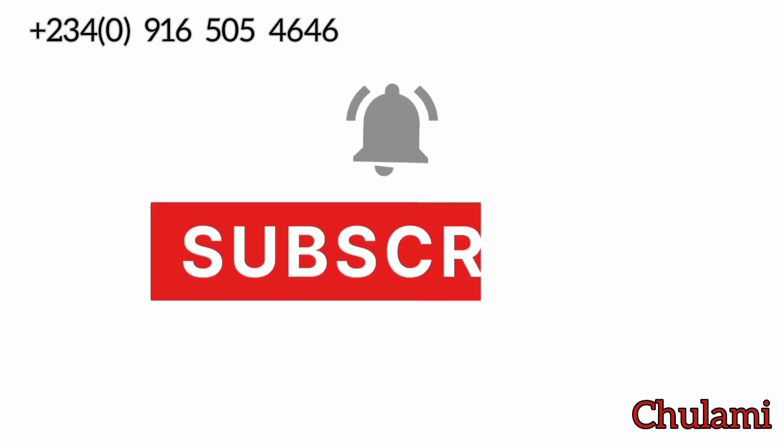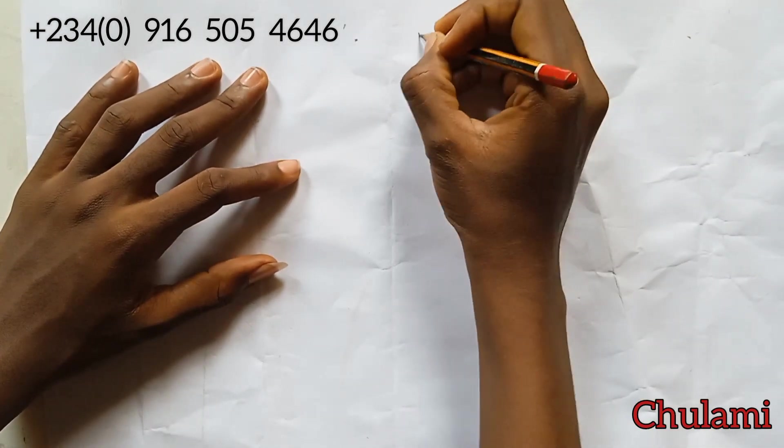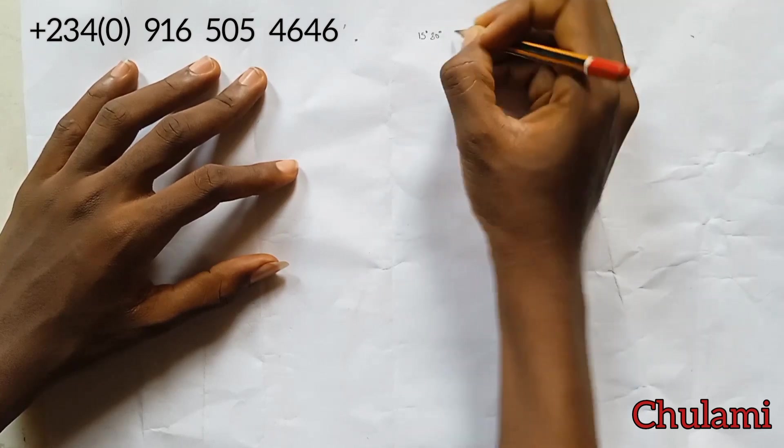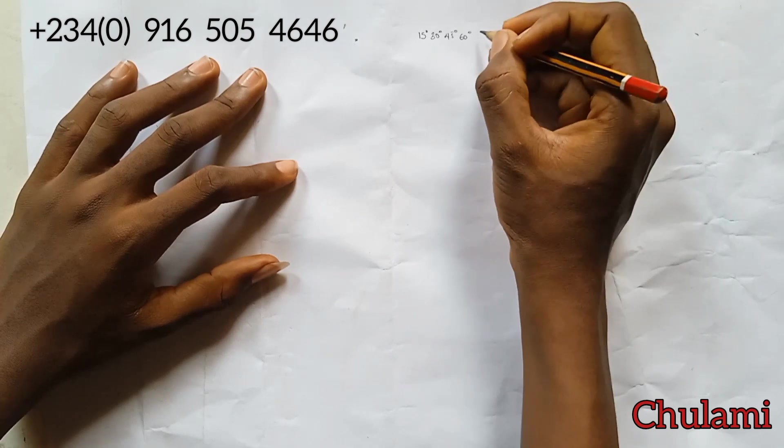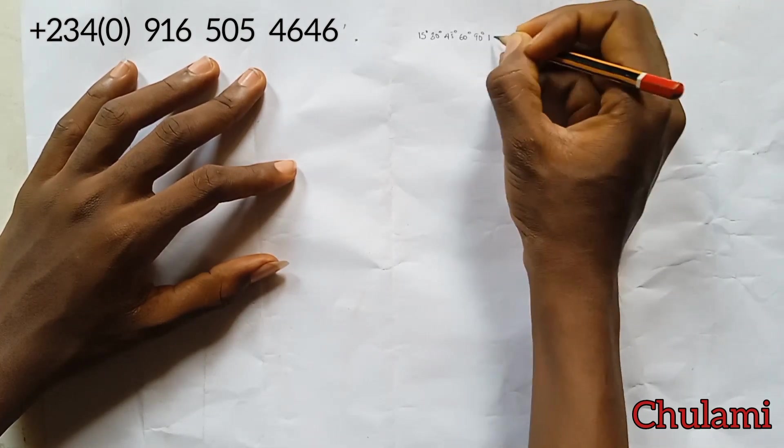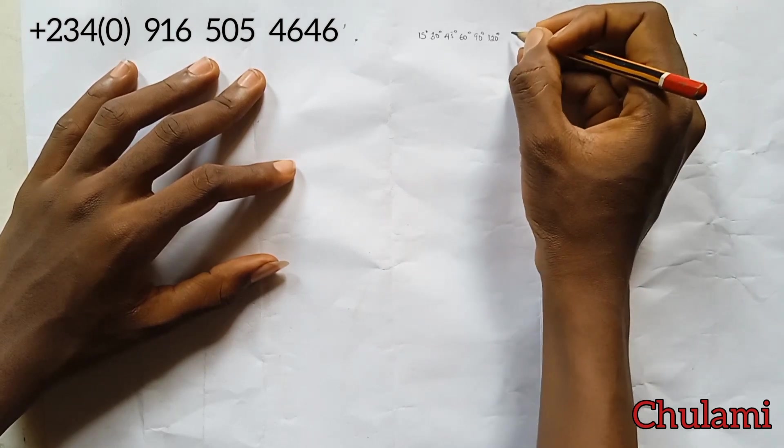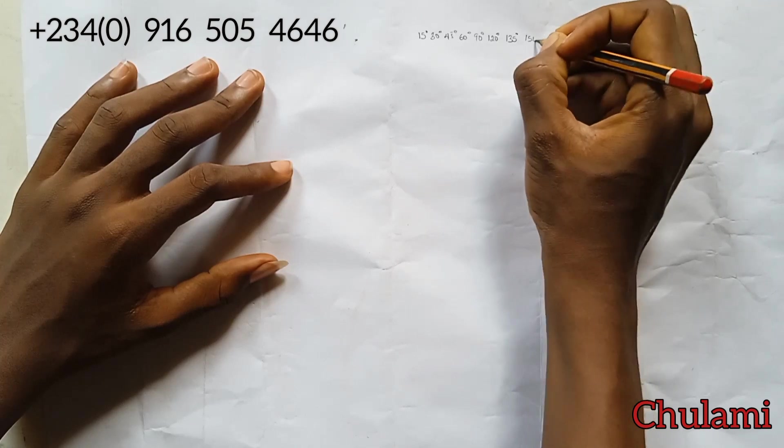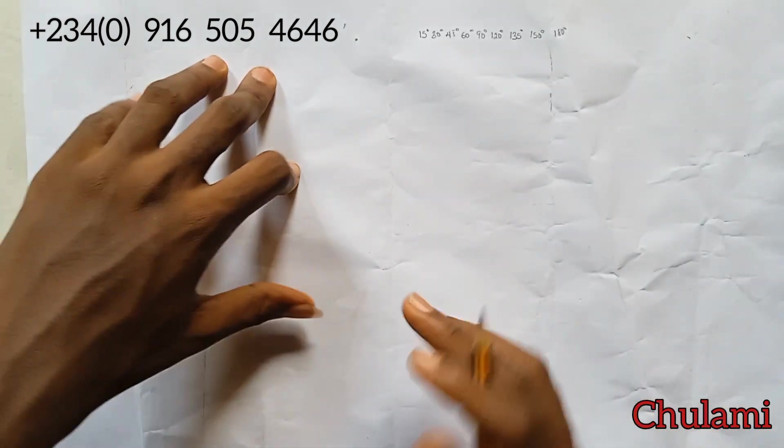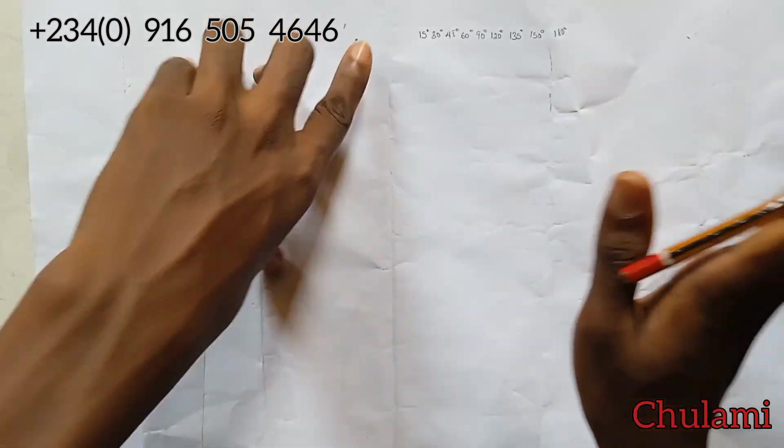Don't forget to subscribe to my YouTube channel, bring the bell to be notified when I post new videos. For today's video, we'll consider angle 15 degrees, 30 degrees, 45 degrees, 60 degrees, 90 degrees, 120 degrees, 135 degrees, 150 degrees, and 180 degrees - constructing these nine angles to one straight line.